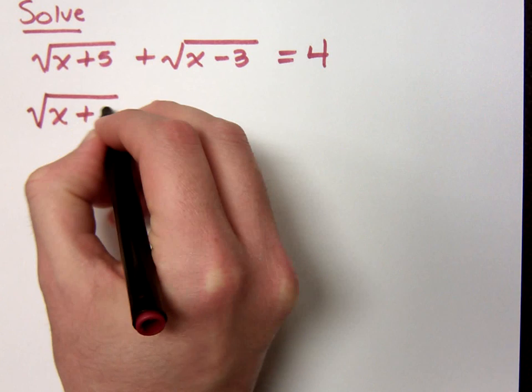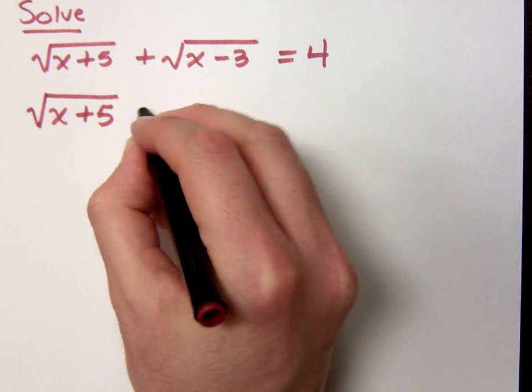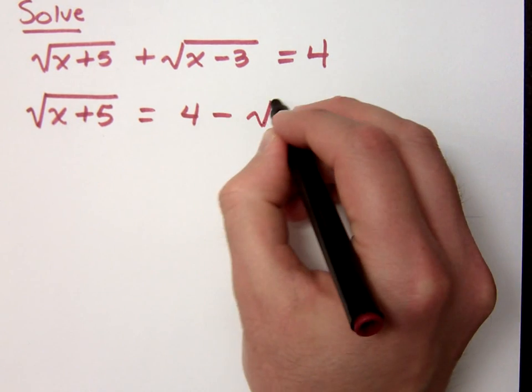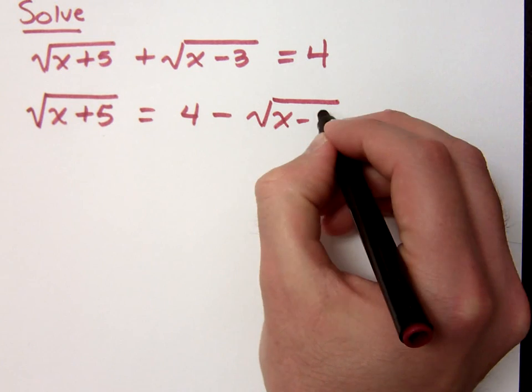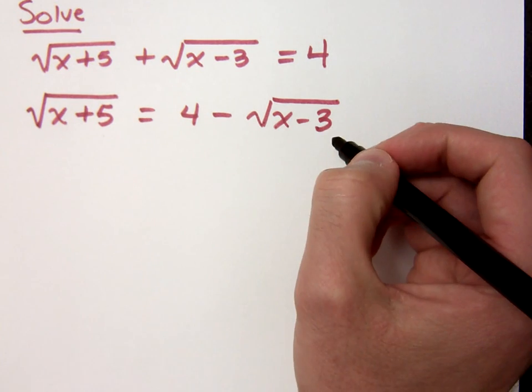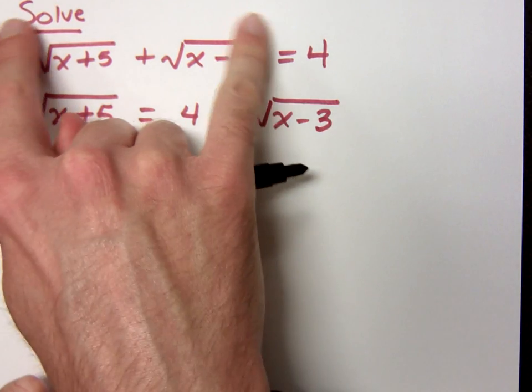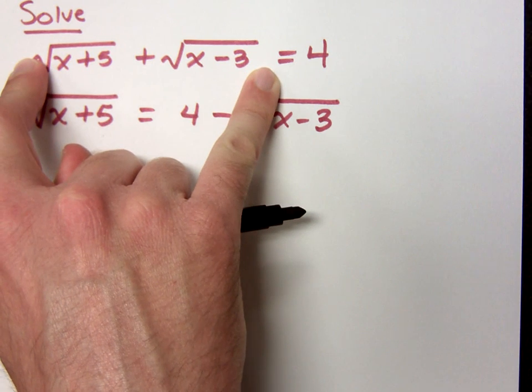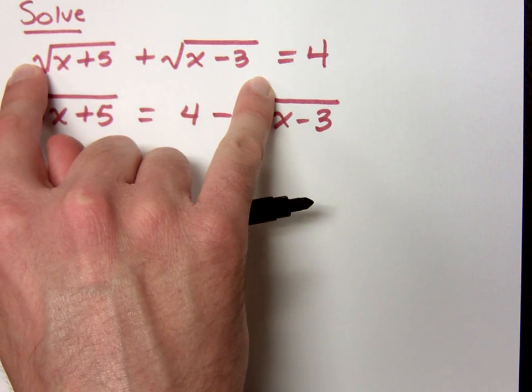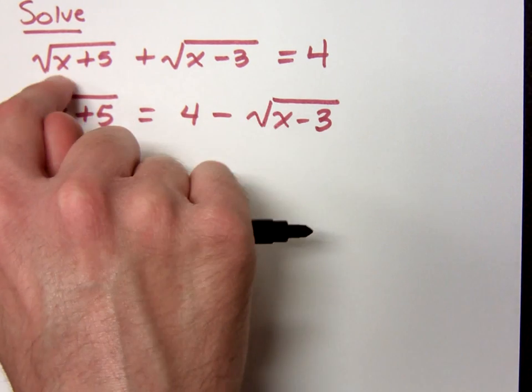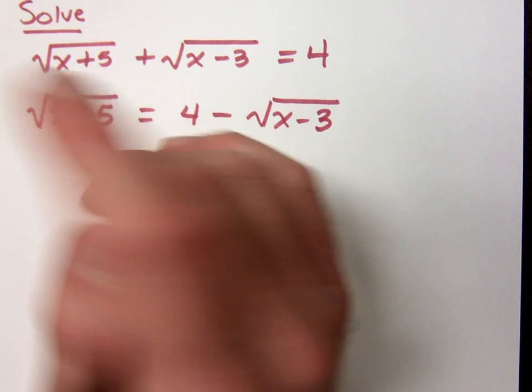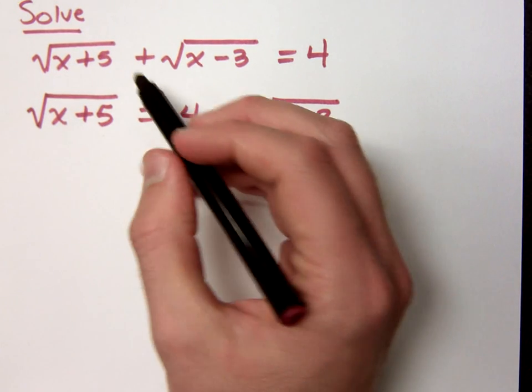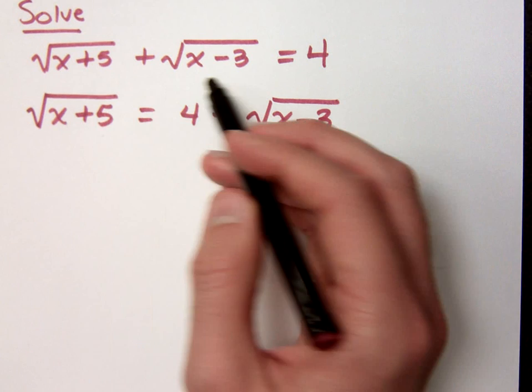So I have the square root of x plus 5 is equal to 4 minus the square root of x minus 3. Now you may ask, why don't I just go ahead and square this side of the equation? Well, if I do that, not only will I square each of these individual radicals, but I also have to have that 2ab part, which gets very confusing and messy when I've got this setup.